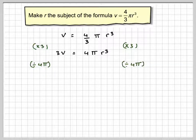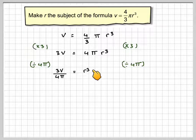When we're doing formulas, we write division as a fraction. So we've got 3V divided by 4 pi, and this side we're just going to have R cubed.